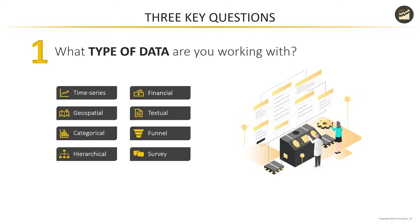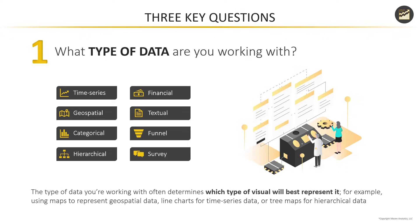Do I have hierarchies that I can drill up or down into as part of my analysis? Then there are some less common categories as well: you might have financial specific data, text data that's less visual or numeric, funnel stages, or even survey responses. There are many more examples, but the bottom line is that the type of data you're working with will often determine which type of visual will best represent it. For example, using maps to represent geospatial data, line charts for time series data, bar column charts for categorical comparisons, tree maps for hierarchical data, and so on.